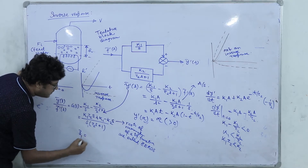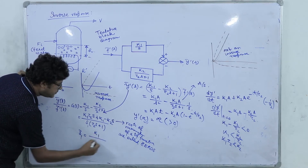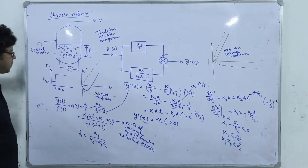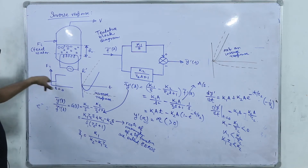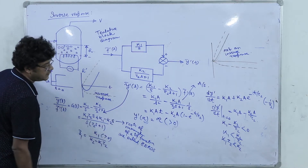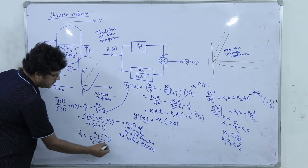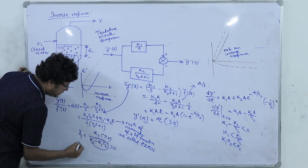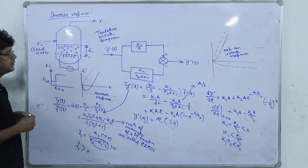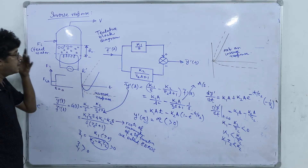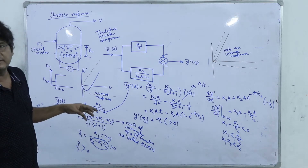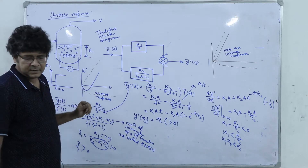The zero z1 here is k1/(k2 − k1·τ2). For the inverse response condition k1·τ2 < k2, both numerator k1 and denominator (k2 − k1·τ2) are positive, so the zero is positive. This leads to the general observation: whenever a system has a positive zero, it is bound to give an inverse response.